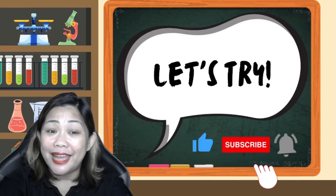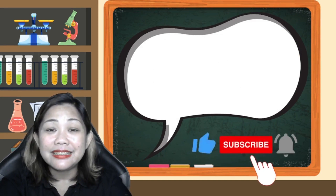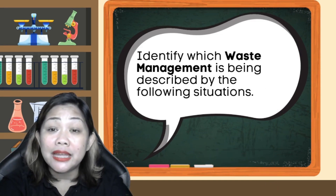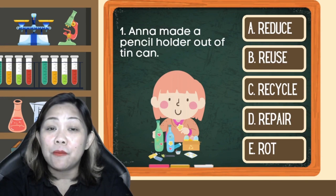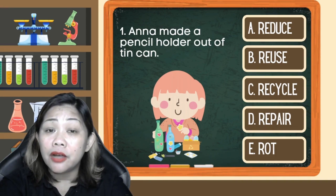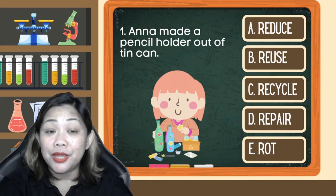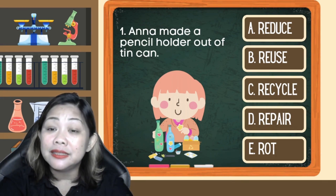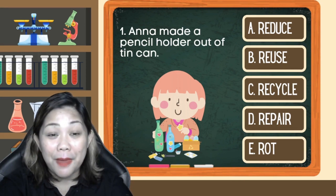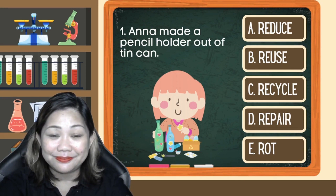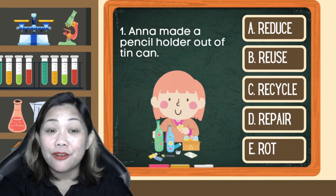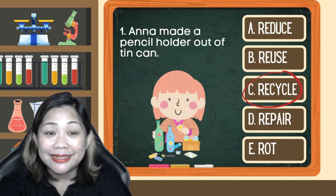Now let's try! Identify which waste management practice is being described. Number 1: Anna made a pencil holder out of a tin can. Is it A. Reduce, B. Reuse, C. Recycle, D. Repair, or E. Rot? The correct answer is C. Recycle. Very good!